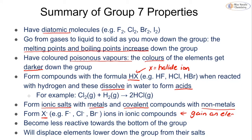The halogens form X⁻ ions in ionic compounds, gaining one electron to become negatively charged and achieve eight electrons in their outer shell. They become less reactive towards the bottom of the group and are able to displace elements. This displacement explanation is in the double science content — for single science it may come up as a problem-solving style question, but you're not expected to explain displacement.